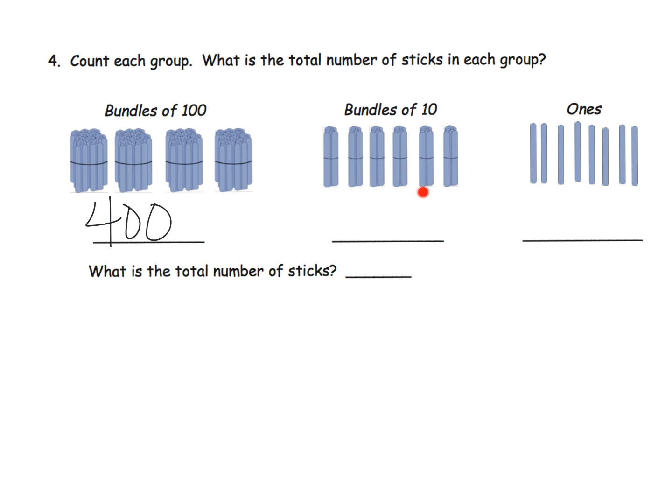Over here, bundles of 10. So you have one 10, two tens, three tens, four tens, five tens, six tens. So six tens, another way you could say it is 10, 20, 30, 40, 50, 60. So we could say we have 60. And parents and teachers, at this point, you can let your students kind of bounce back and forth between calling this six tens or 60. Both are fine at this point.